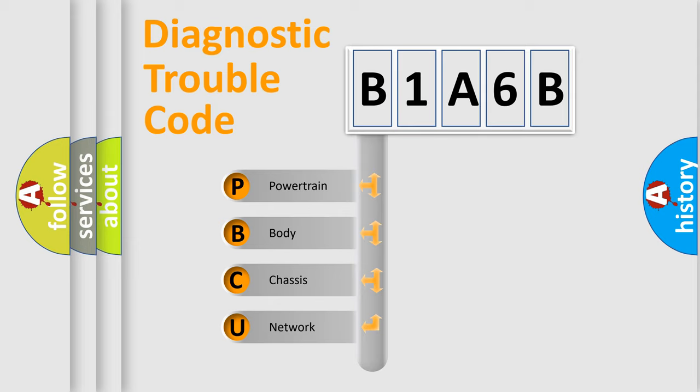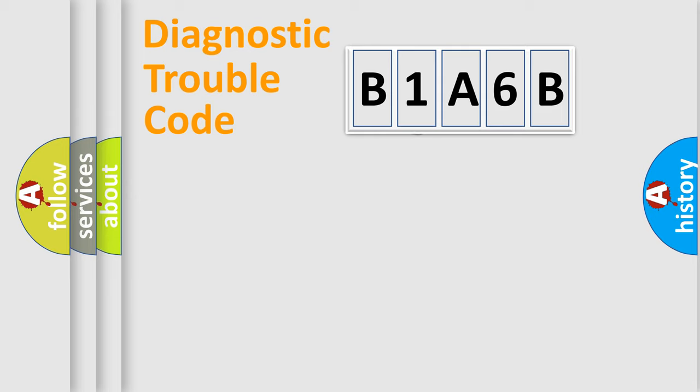We divide the electric system of automobile into the four basic units: Powertrain, Body, Chassis, Network. This distribution is defined in the first character code.